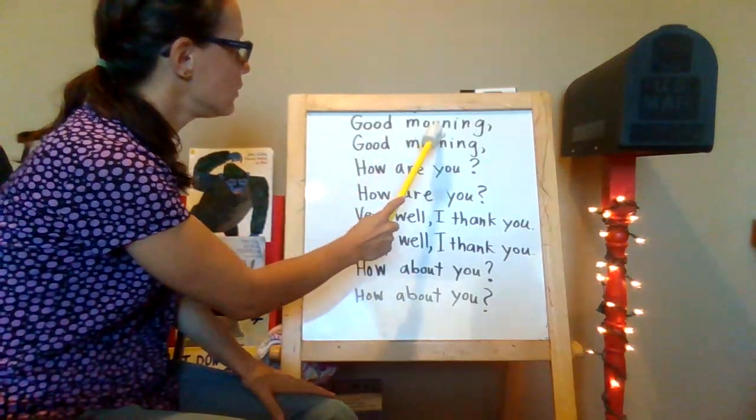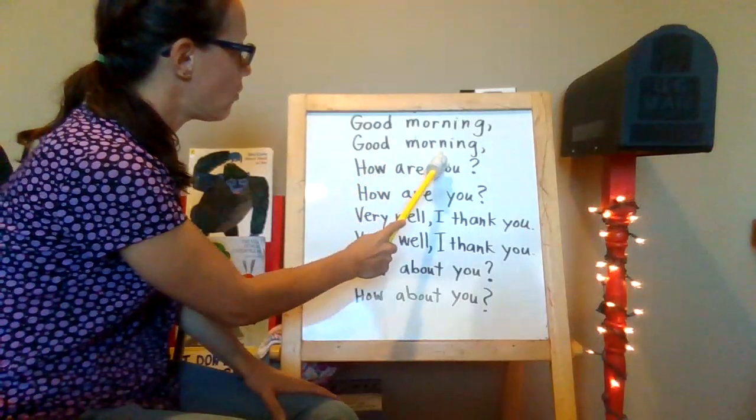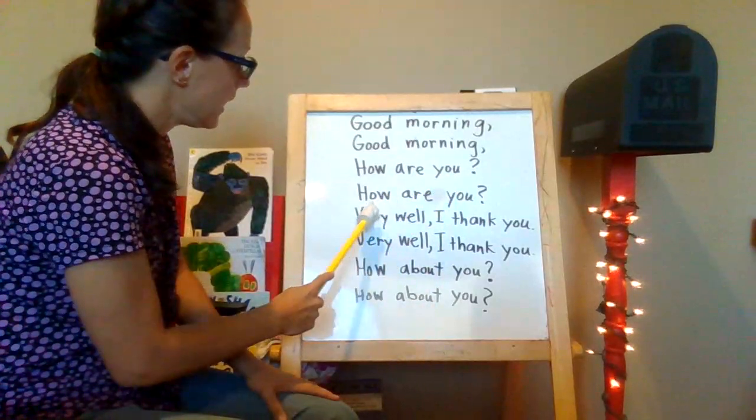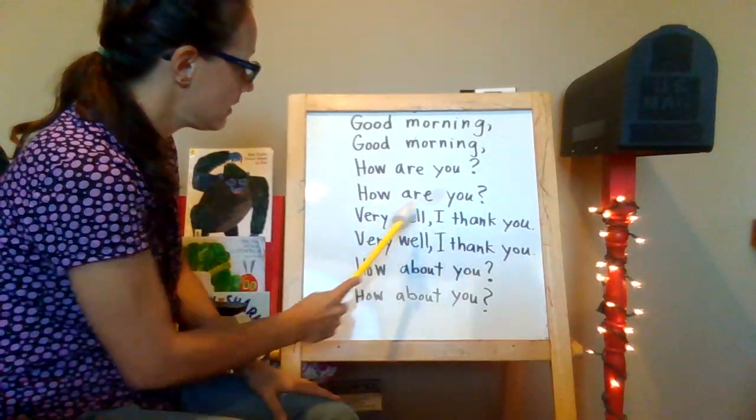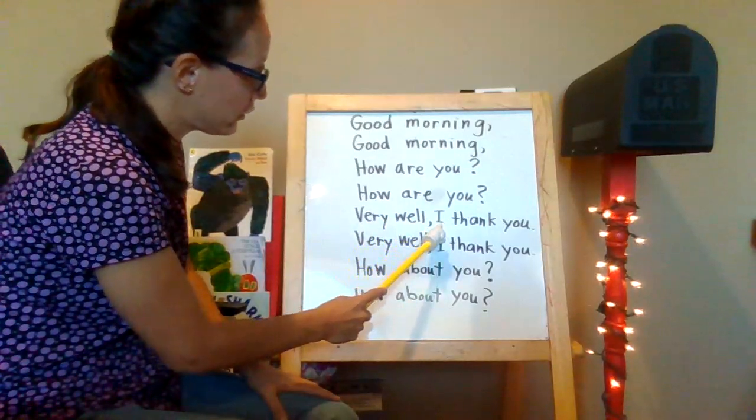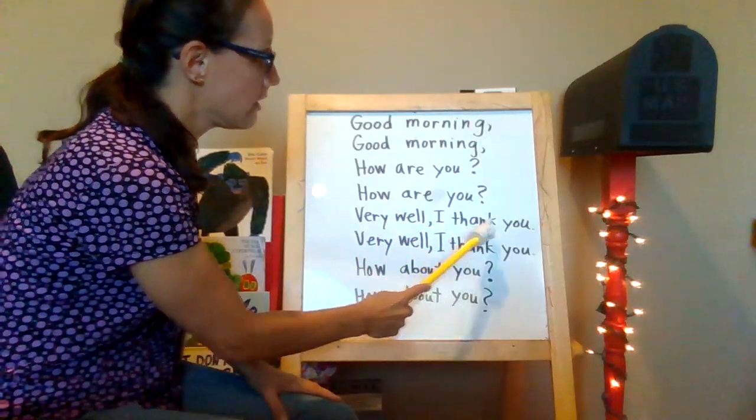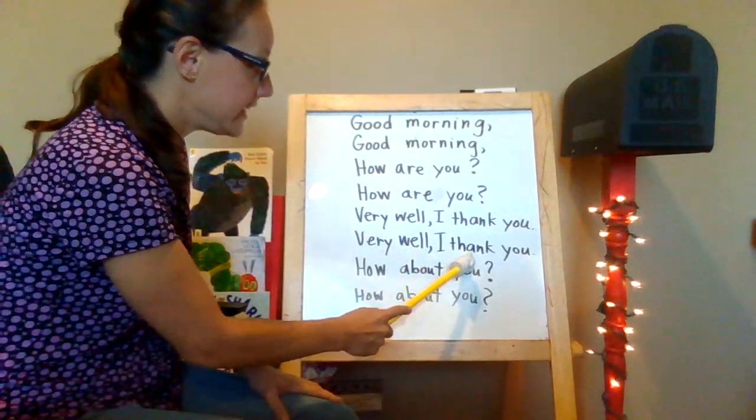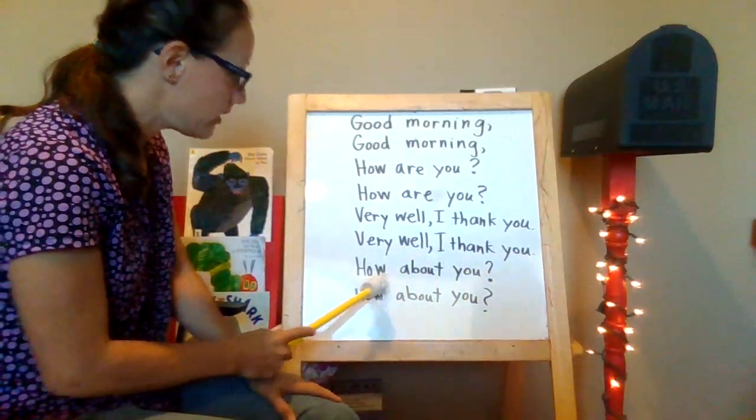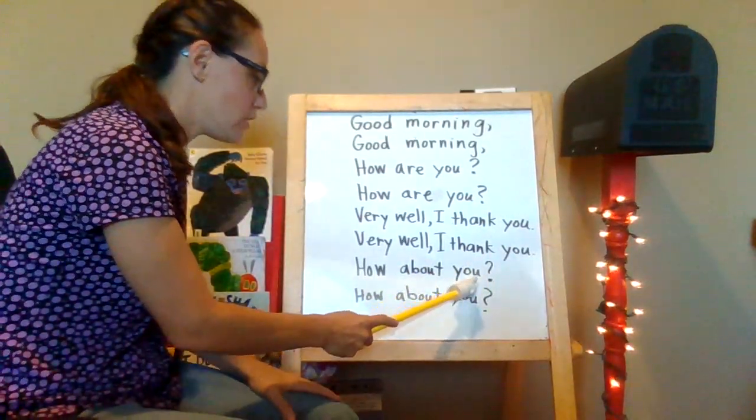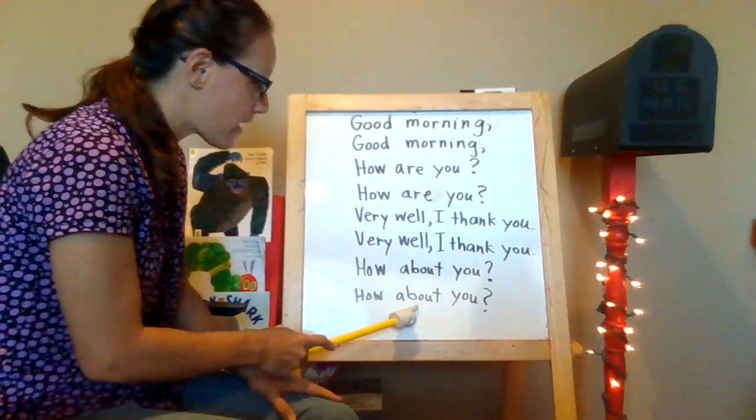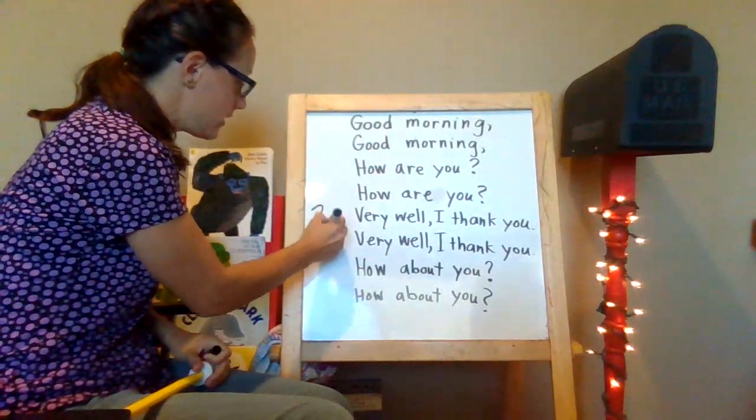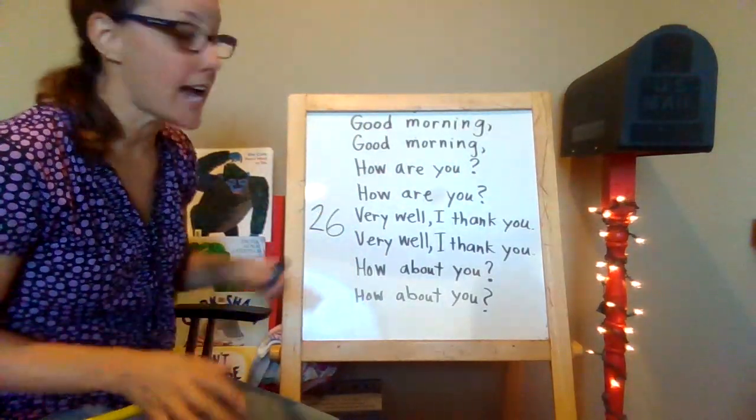One, two, three, four, five, six, seven, eight, nine, ten, eleven, twelve, thirteen, fourteen, fifteen, sixteen, seventeen, eighteen, nineteen, twenty, twenty-one, twenty-two, twenty-three, twenty-four, twenty-five, twenty-six. Wow! There are twenty-six words inside this song.